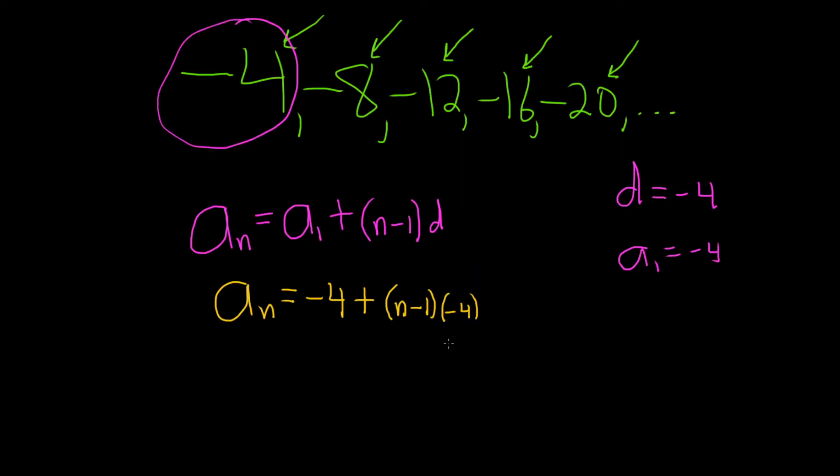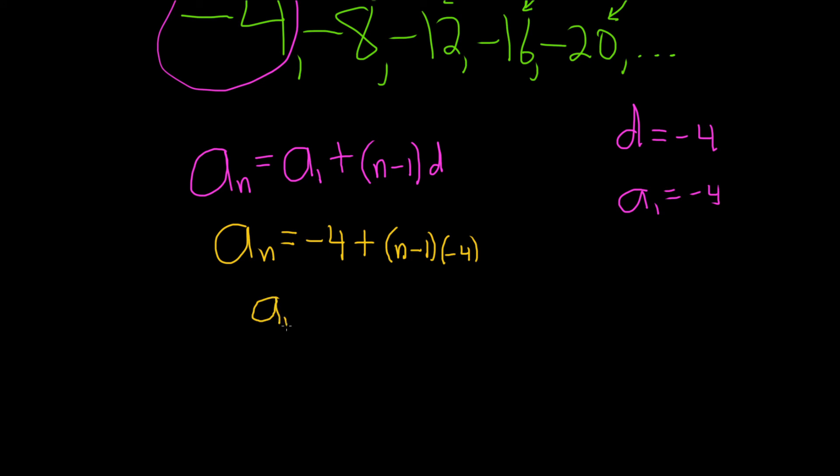Now we can clean this up. So a sub n equals negative 4 plus, negative 4 times n gives us negative 4n. And negative 4 times negative 1 is plus 4. These cancel, so we get a sub n equals negative 4n, and that's the final answer.